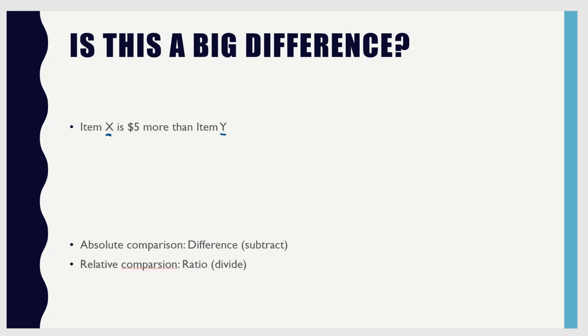Proportions look at what's called relative comparisons. A relative comparison means that we're going to have a ratio. An absolute difference between two things means you subtract. A relative comparison means that we're going to have division, and that means fractions.